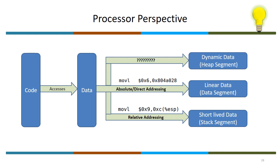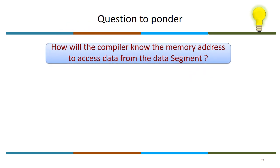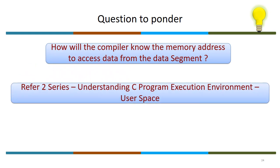The heap segment will be looked at in more detail in section 1.6. A question to ponder: in this session we have been saying the compiler generates an address and will know about the address of variables associated with the data segment. How will the compiler know the memory address to access data from the data segment? Memory is an execution-time concern; the compiler is a build-time concern. How will the compiler know this?